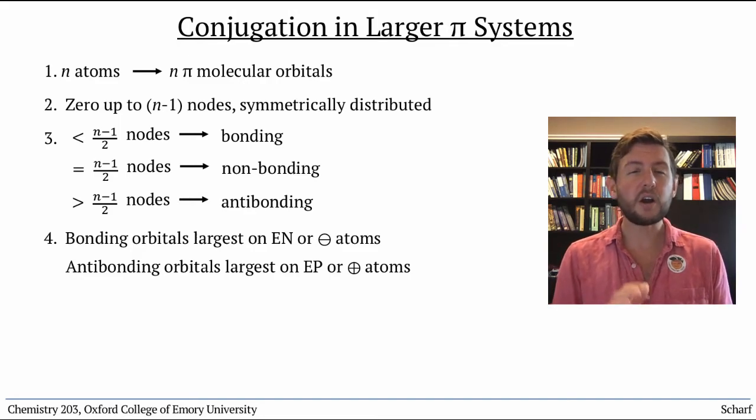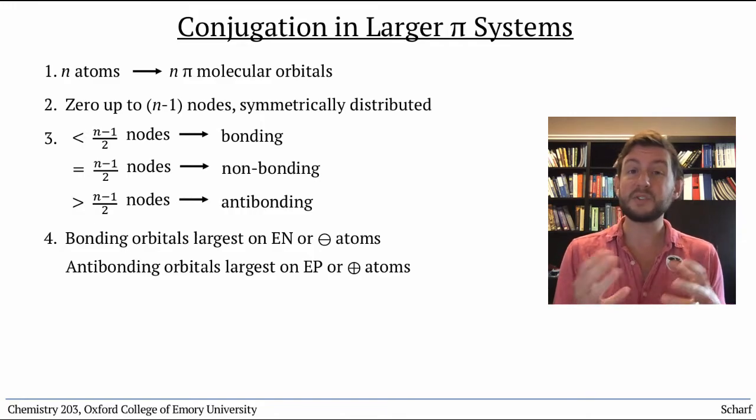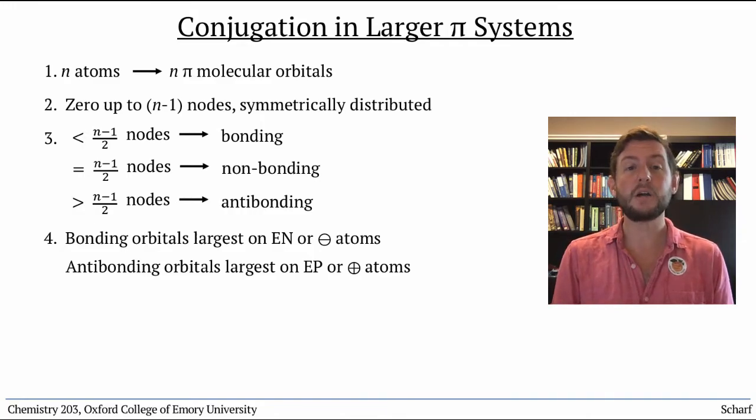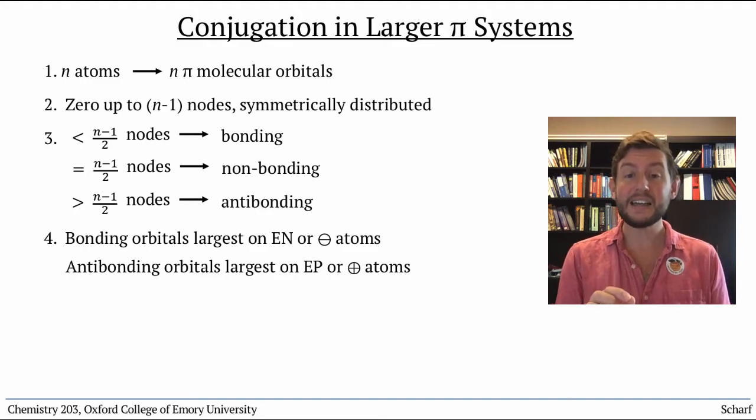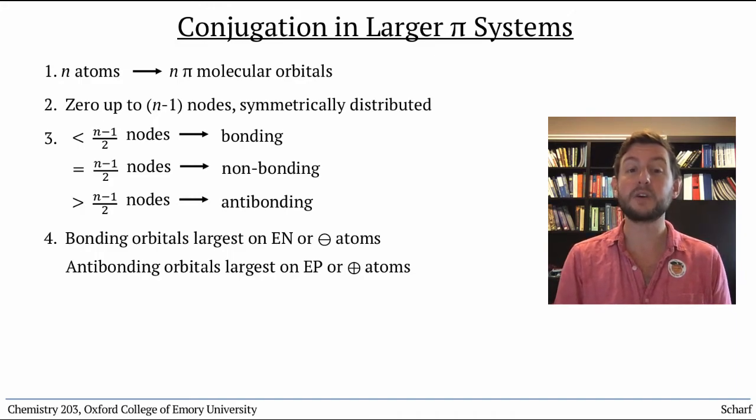Nonbonding orbitals are a bit harder to predict orbital sizes, but we'll talk about specific instances when it becomes relevant. Remember that size of an orbital reflects the likelihood of an electron in that orbital being at a particular location.